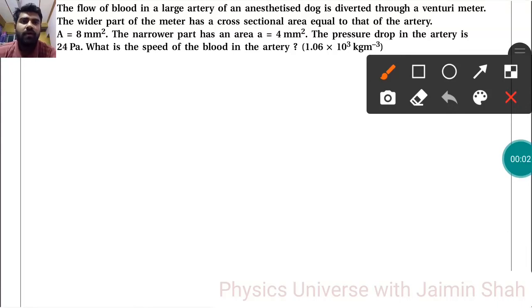The question is: the flow of blood in a large artery of an anesthetized dog is diverted through a venturimeter. The wider part of the meter has a cross-sectional area equal to the artery, so capital A equals 8 millimeter square. The narrower part has an area a equals 4 millimeter square.